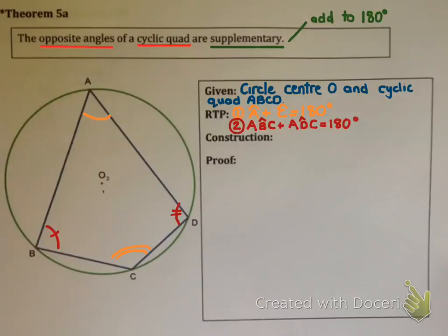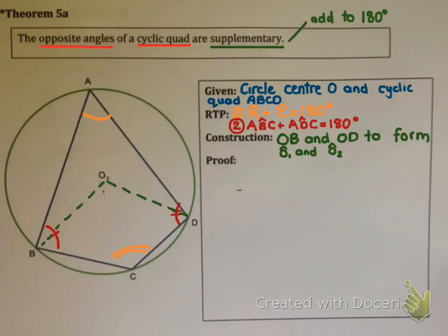Let's start by proving the first thing. In order to prove number one, we need a construction. I've drawn in the construction — that construction is radii OB and OD — and I've chosen to label the angles at the center angle O1 and angle O2. You'll notice why that's very helpful in a second.